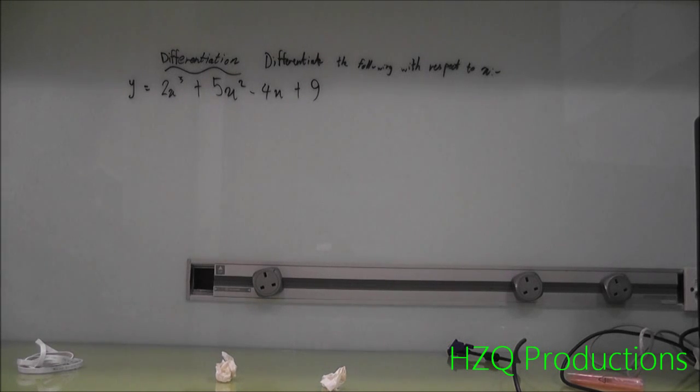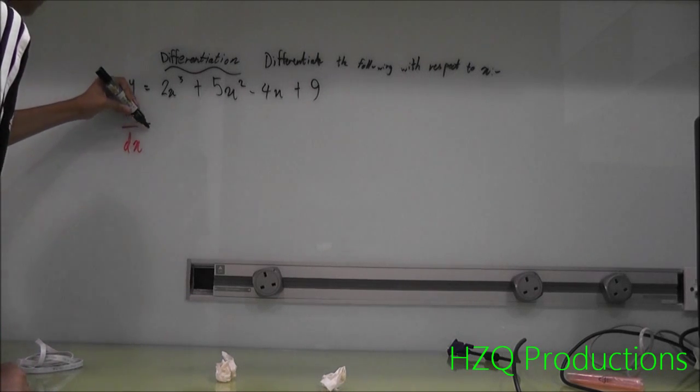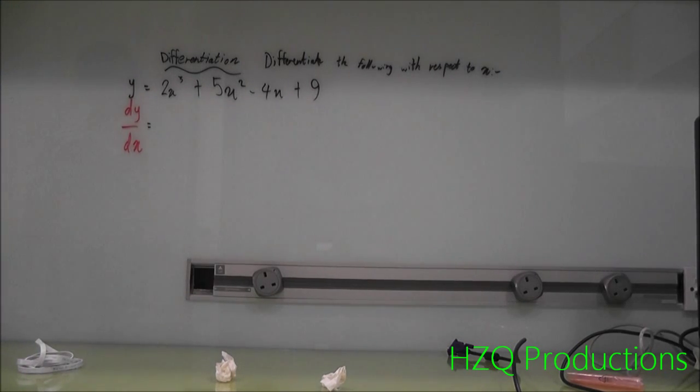Well, when we differentiate this, when there is a y here and then at this point you can see the x term, we normally have this dy over dx. You have to get familiar with this term here. Now, dy over dx sounds like a complicated symbol but do not worry about that. This is just like one term. Okay, now we come to the differentiation.